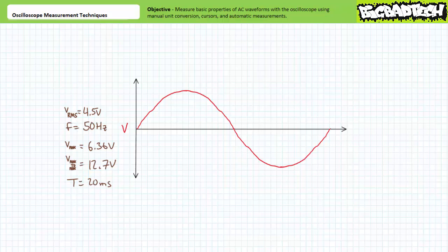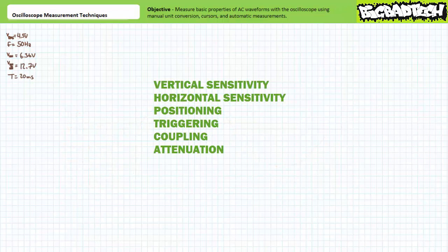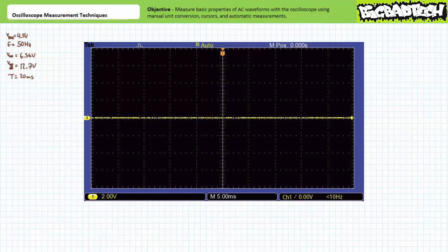Our task is to set up the O-scope to display this waveform and measure its properties. We first need to properly scale the vertical voltage and horizontal time axis and position the trace on the screen to accommodate this waveform. We also need to set up proper triggering conditions, select an appropriate coupling option, and establish the level of attenuation. Given we anticipate a 6.4 volt peak value and our display includes 8 divisions top to bottom, a vertical sensitivity of 2 volts per division might do the trick.